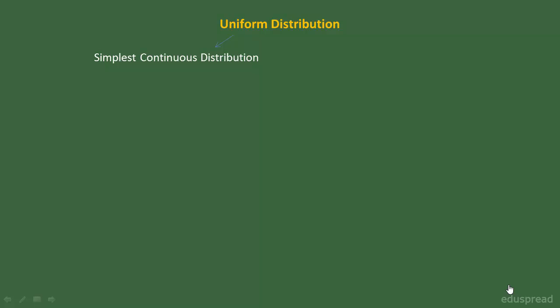In this lecture we will discuss uniform probability distribution. Uniform probability distribution is the simplest continuous distribution and I am starting with this distribution to build some fundamental concepts.